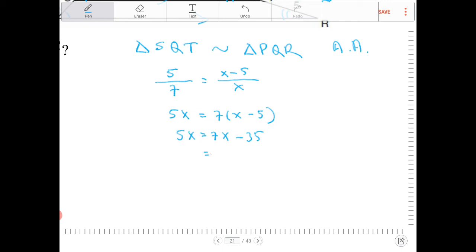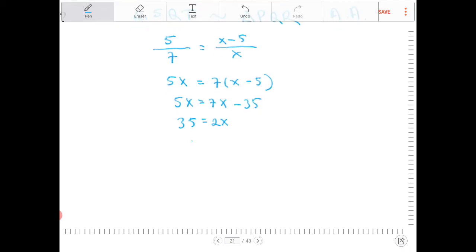Subtract 5X from both sides, I get 2X. Add 35 to both sides, I get 2X is equal to 35. Let's divide both sides by 2. I end up with 35 halves, or really this is going to be 17.5.